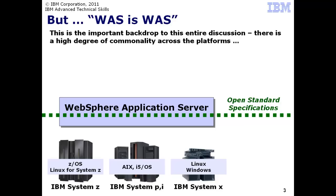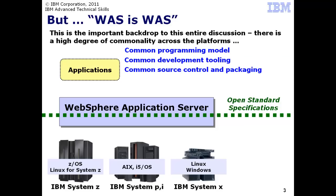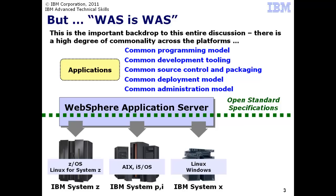The open standard specifications supported by WebSphere Application Server are common and consistent across all supported platforms. That means applications see a common and consistent programming model regardless of the underlying OS and platform, with common development tooling, common source control and packaging, a common deployment model, and a common administration model. However, below the open standard specification line, WebSphere Application Server has a portion of unique code designed to exploit the platform it is running on.